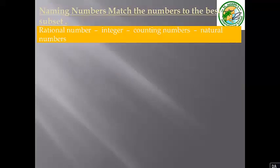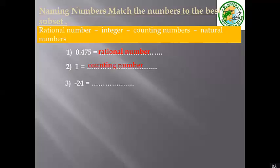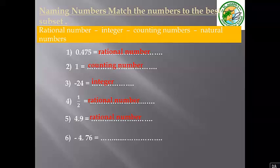Match the numbers to the best subset: rational number, integer, counting number, or natural number. 0.475 is a rational number. 1 is a counting number. Negative 24 is an integer. One-half is a rational number. 4.9 is a rational number — it is a decimal. Negative 4.76 is a rational number. 0 is a natural number.